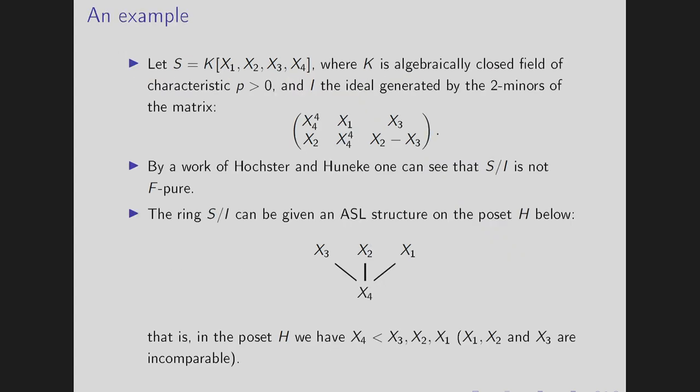Now we conclude with this the following example. So let S be a polynomial ring in four variables then K is algebraically closed, p greater than zero and I be the ideal of this 2 by 2 minor. And by a work of Hochster and Huneke that S mod I is not F-pure. The point is that this example can be given as an ASL structure with this that where four variables X1, X2, X3 and X4 where X4 is less than X1, X2, X3 and all X1, X2, X3 are not comparable. And then this is by the terminology of Eisenbud this is a wonderful poset and conjecture of Eisenbud states that any ASL on a wonderful poset is F-pure. This gives the counter example of that conjecture because this is not F-pure and this poset is wonderful.